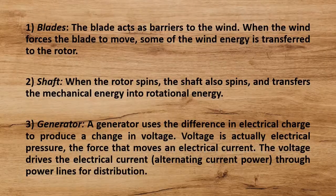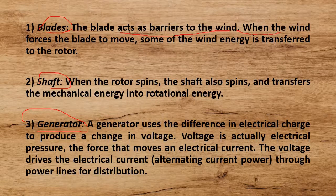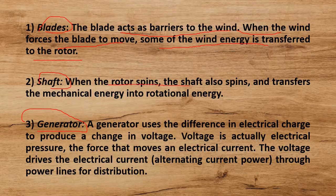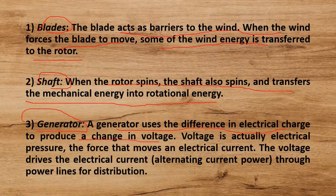There are three main parts of a wind turbine: blades, shaft, and generator. The blades act as a barrier to the wind; when the wind flows, the blades move and some wind energy is transferred to the rotor. When the rotor spins, the shaft also spins and transforms the mechanical energy into rotational energy. The generator uses a differential electrical charge to produce a change in voltage — voltage is the electrical pressure, the force that moves an electrical current.